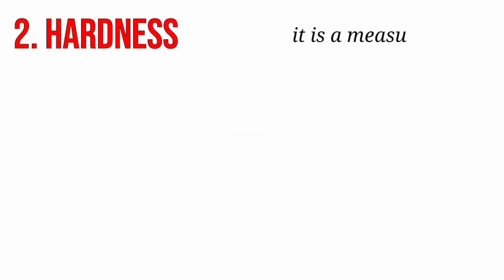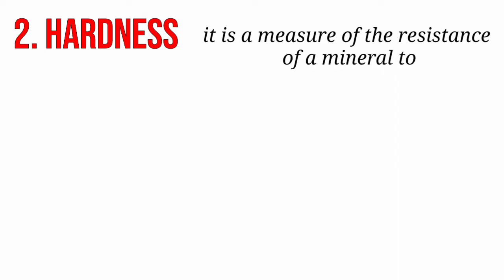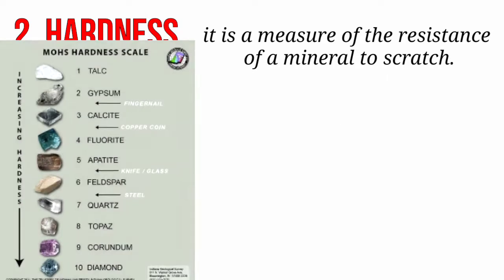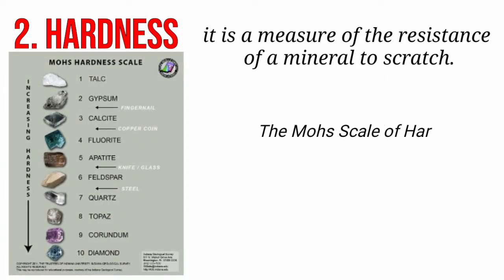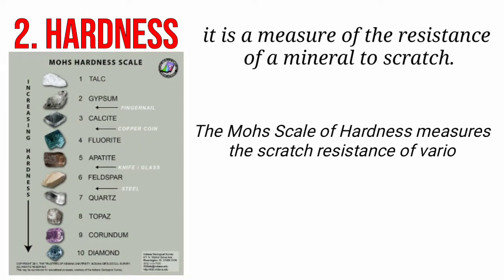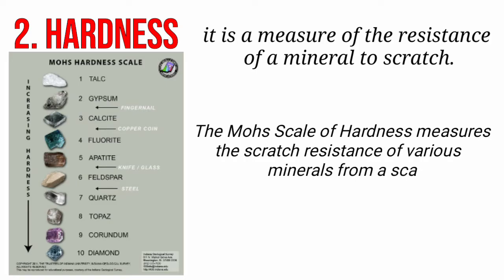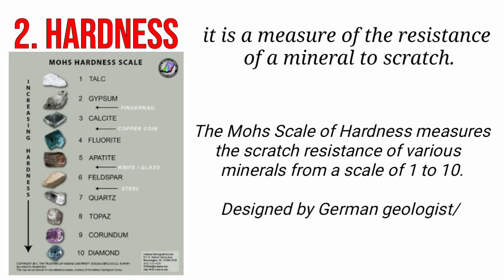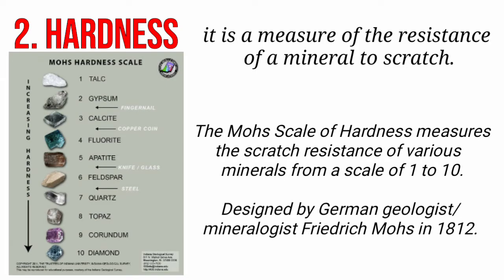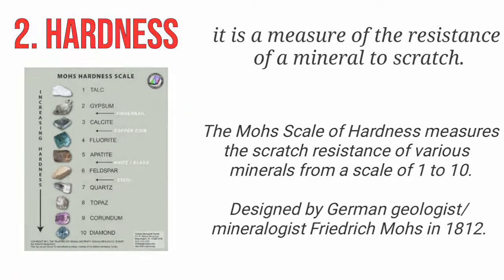Next is hardness. It is a measure of the resistance of a mineral to scratch. The Mohs scale of hardness measures the scratch resistance of various minerals from a scale of 1 to 10, with chalk as the softest and diamond as the hardest mineral. This was designed by mineralogist Friedrich Mohs.